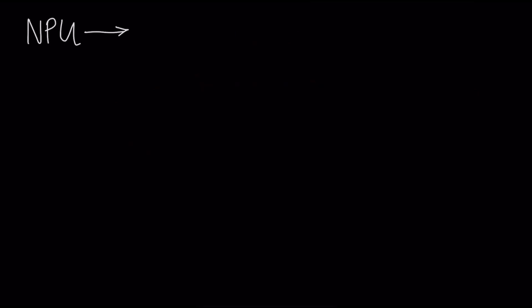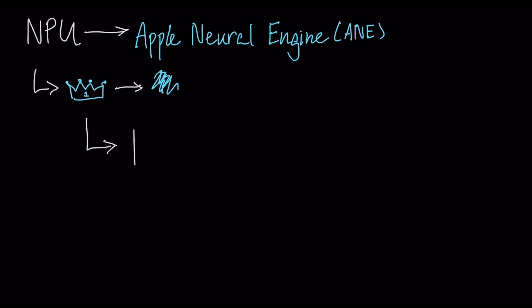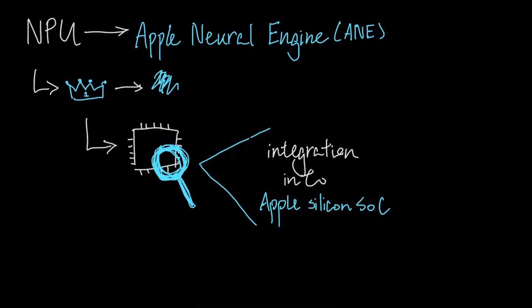The most prominent and impactful example of an NPU is the Apple Neural Engine. But the reason it performs so well compared to its competitors isn't just because of raw power. Its real advantage can't be understood by looking at the chip in isolation. Its capabilities are magnified by its deep integration into the Apple Silicon SoC.